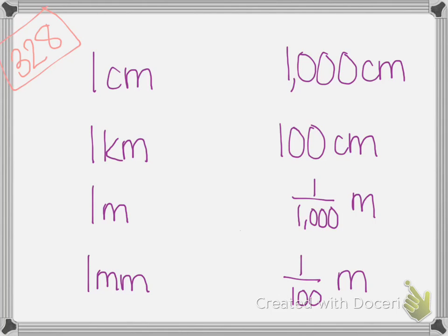So I'm going to start with the easy ones. 1,000 centimeters I know equals 1 kilometer. 1,000 centimeters I know equals 1 meter.